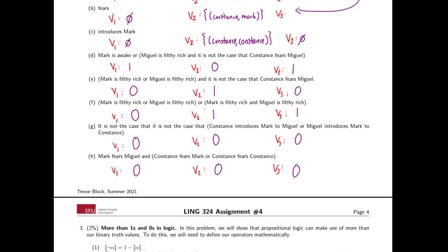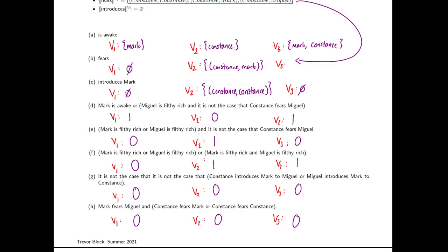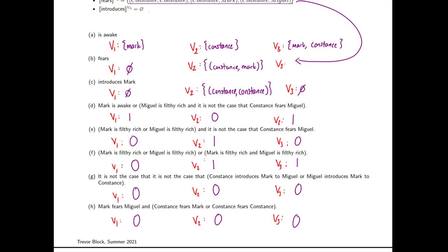For D, E, F, G, and H, these are just truth values — go through each one and figure out whether each part is true or false, then apply them as you would with truth tables. For example: 'Mark is awake or Miguel is filthy rich, and it is not the case that Constance fears Miguel.' For V1, 'Mark is awake' is true (1), 'Miguel is filthy rich' is false (0), and the negation part is also false (0). So we have 1 or 0 and 0 — the 'or' evaluates to 1, so V1 is true. We do that for every situation with every sentence. If you want any of these explained in more detail, feel free to ask.